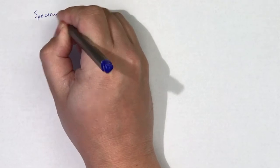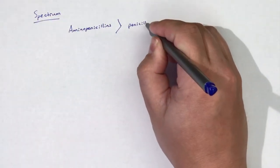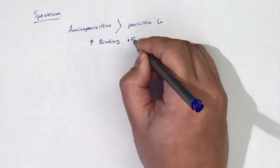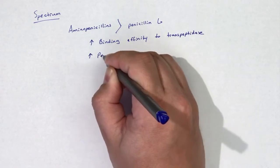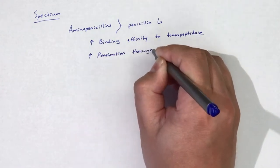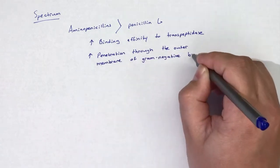As mentioned, aminopenicillins have expanded coverage versus penicillin G against gram-negative bacteria. This enhanced coverage is attributable to increased binding affinity to transpeptidase and increased penetration through the outer membrane of gram-negative bacteria.